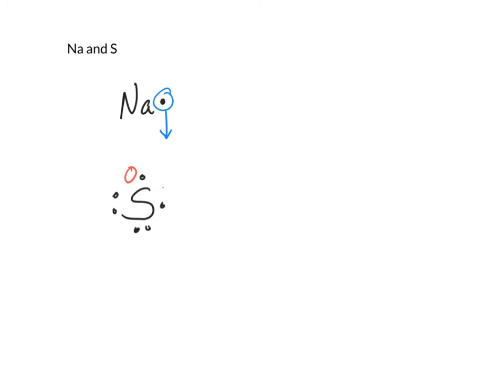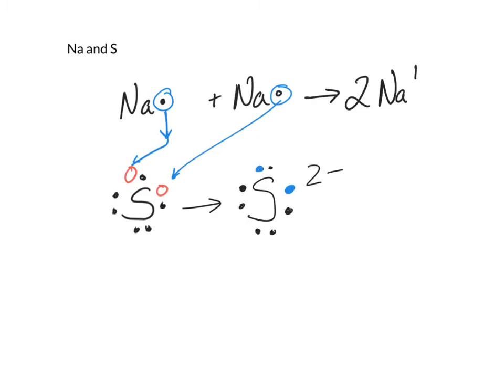So what happens is sodium goes out and finds another friend, another sodium, that wants to give away another electron so the sulfur can have its eight and each sodium goes down to zero valence electrons, or really the one before it, so eight valence electrons. What do we see from this formula? There are two sodiums, one sulfur. So the formula will be Na2S.